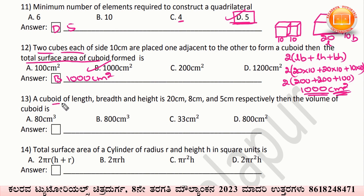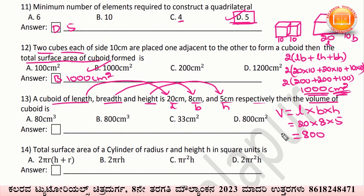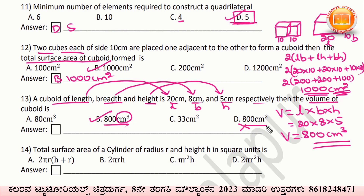A cuboid of length 20 cm, breadth 8 cm, height 5 cm. We have to find the volume of the cuboid. Volume equals length into breadth into height. That is 20 × 8 × 5. 8 times 5 is 40; 40 times 20 gives 800. Volume equals 800 cm³. The unit for volume is centimeter cube, not centimeter square.